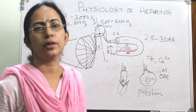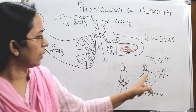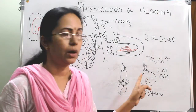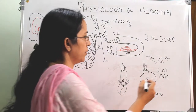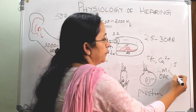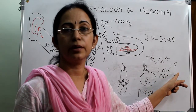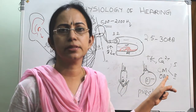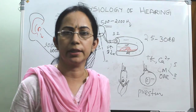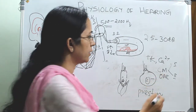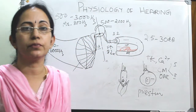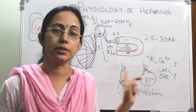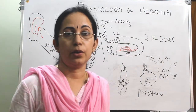Cochlear microphonics is an alternating current potential produced by the outer hair cells. There are two types: cochlear microphonics 1 and 2. Microphonics 1 is very dependent on oxygen — it is absent with lack of oxygen and after death. Cochlear microphonics 2 is independent of oxygen, so it can be recorded even hours after death of a person.